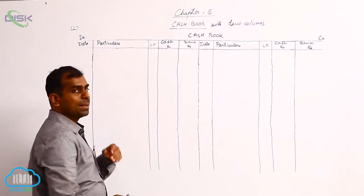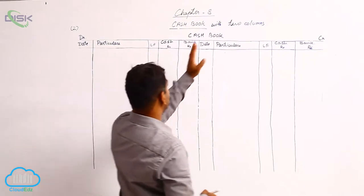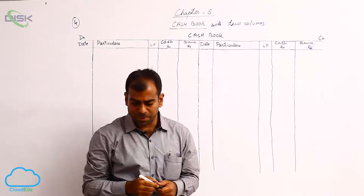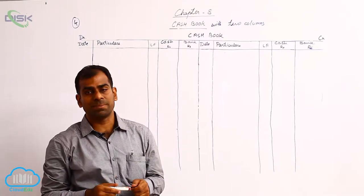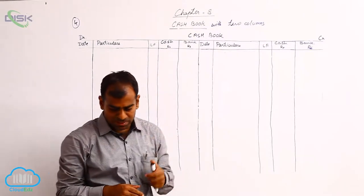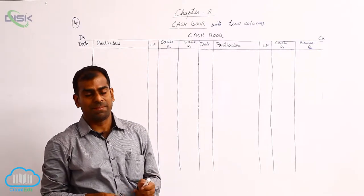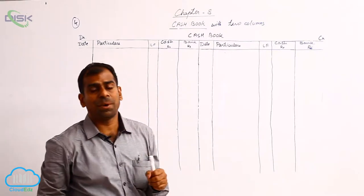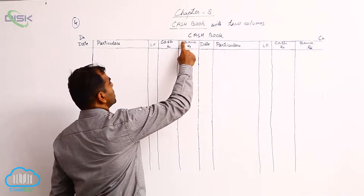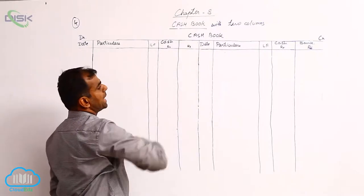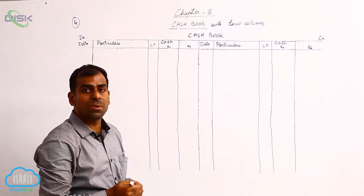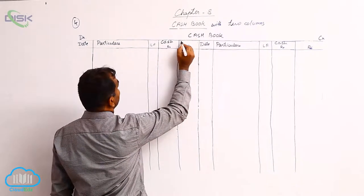The double column cash book is a cash book with two columns. In problem number four, you are instructed to prepare and record the following transactions in a two column cash book. After reading the problem, you can analyze which two columns to prepare. Based on the transactions, we have to prepare the cash book with cash and discount columns, so there is one column for cash.